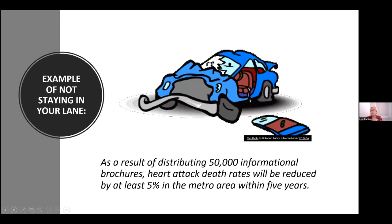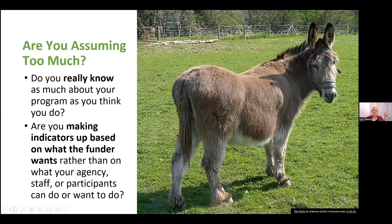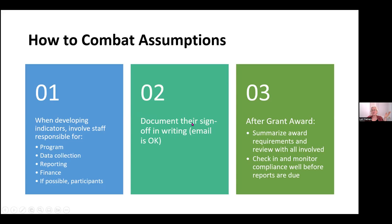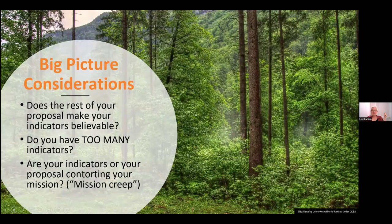For example: 'As a result of distributing informational brochures, heart attack death rates will be reduced by 5% in the metro area in five years.' That is an actual indicator a client came to me with — the funder was upset and I had to negotiate a different indicator for them. Finally, don't make things up. Work with your program people, involve staff, document their sign-off, and after the grant award, review everything with them before they get started. Also ask: does the rest of your proposal make it believable? Do you have too many indicators? Are you creeping the mission?